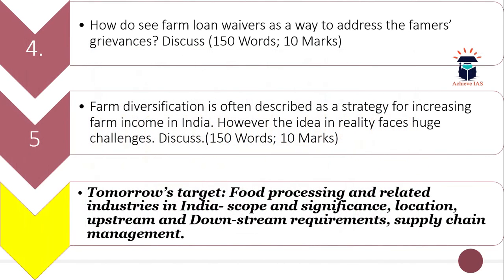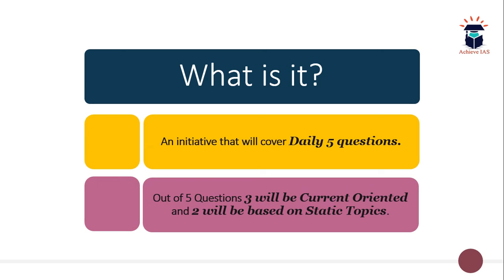The fourth and fifth questions might seem to be from the dynamic part, but they are actually from the static part, though linked with current affairs. Today's target was about farm subsidies, the public distribution system, farm diversification, crops, and cropping patterns. Tomorrow's questions will be asked from the food processing topics mentioned. We don't pick topics randomly — we follow a detailed timetable.